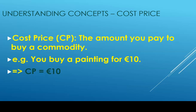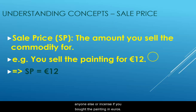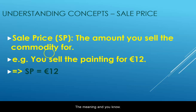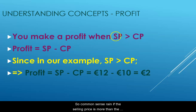Then you have something called a sale price or selling price — it's the amount you sell the item for to anyone else. For instance, if you bought the painting for ten euros and a year later its price went up over time, and you decide to sell it for twelve euros, then that twelve euros becomes your sales price.